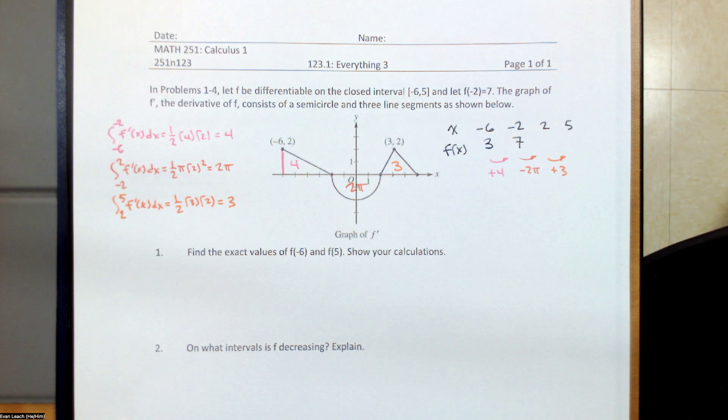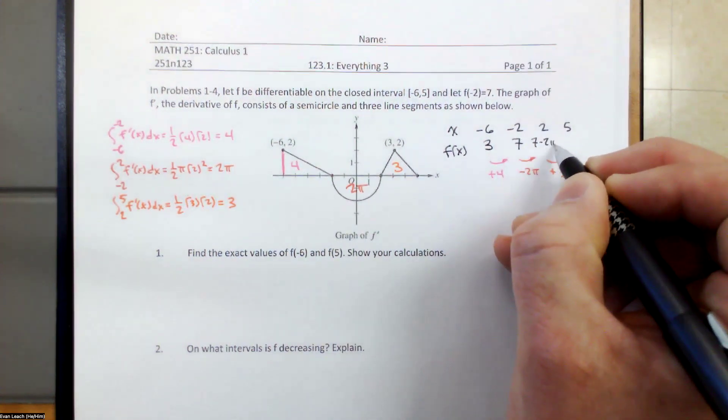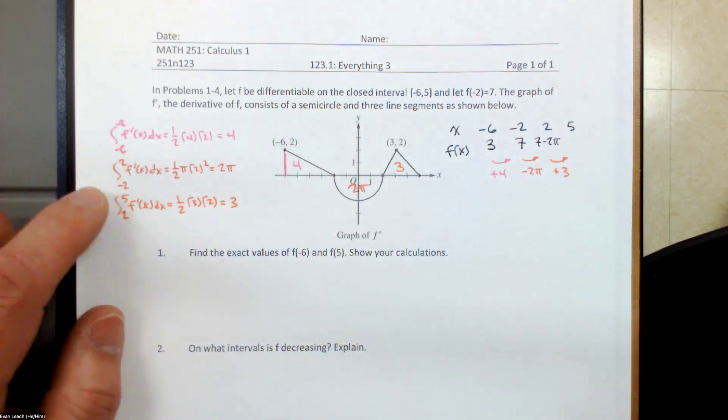From negative 2 to 2, we're going to decrease by 2π, and I ask for exact values. So we'll just write 7 minus 2π. That's the exact value of f of 2. And then the other problem has the exact value of f of 5, where we go from 7 minus 2π, we add 3, so that must be at 10 minus 2π.